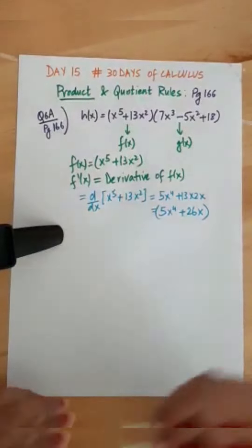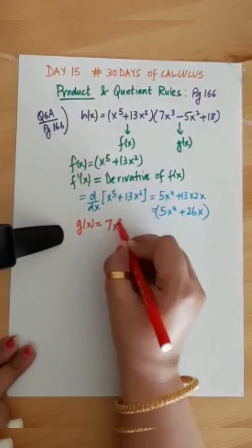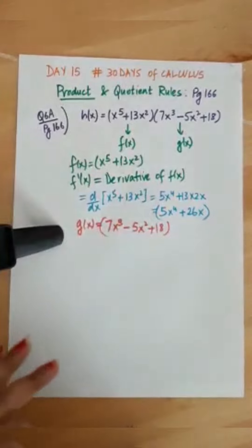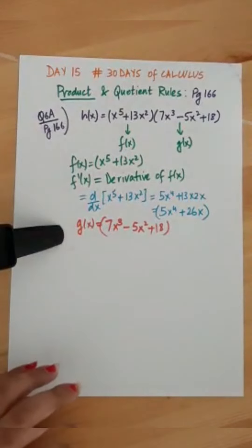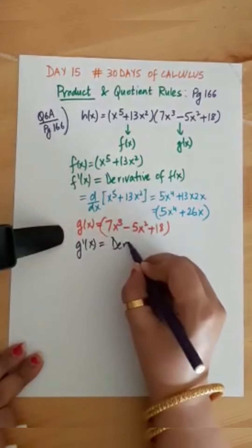Now we take the second function. Let's write g(x). It is 7x cube minus 5x square plus 18. Let's take its derivative. So we are now going to calculate g prime of x which is derivative of g(x).